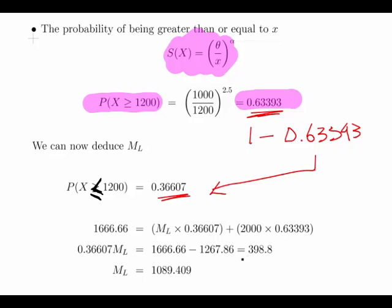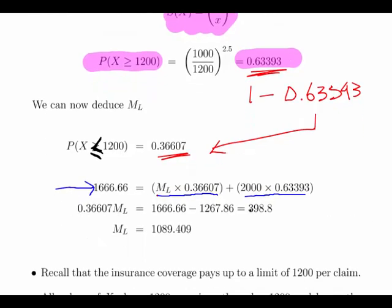We know that the overall mean is 1666.66 and this is a weighted mean of the claims under the threshold of 1200 (36% of them) and the claims over the threshold of 1200 (63.39% of them). The average of those claims above the threshold is 2000.